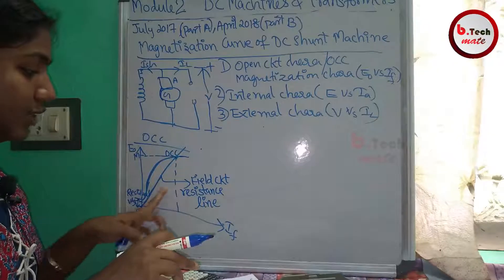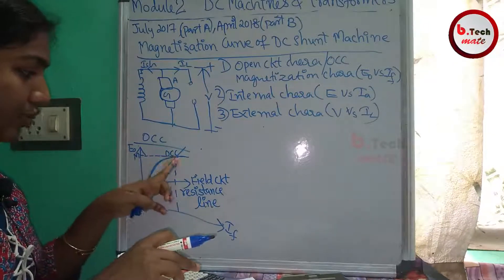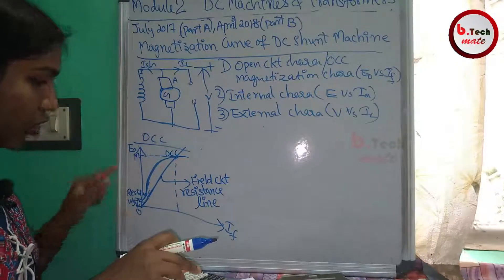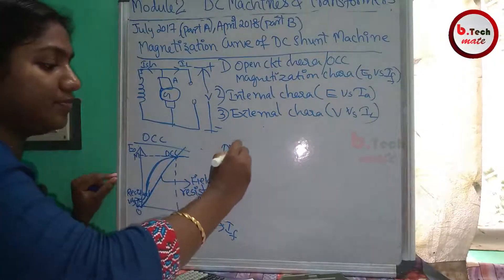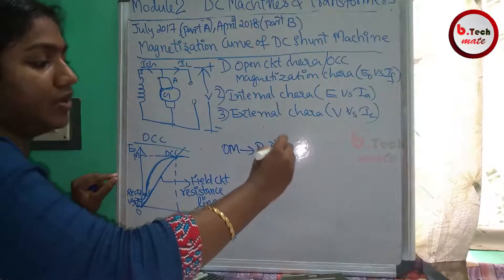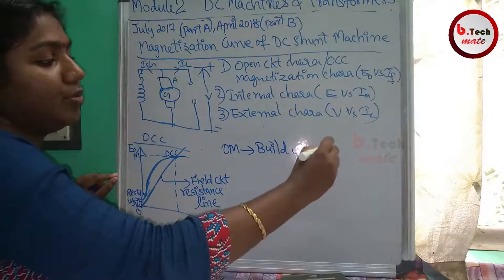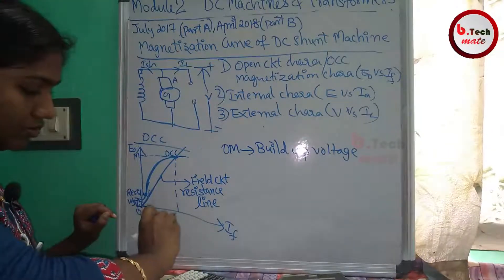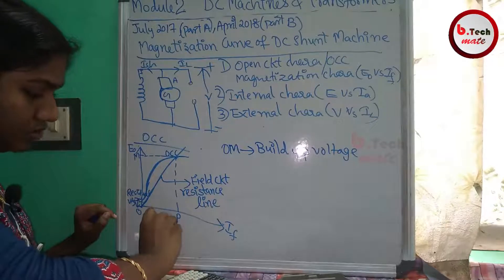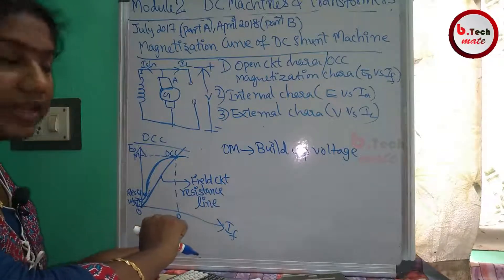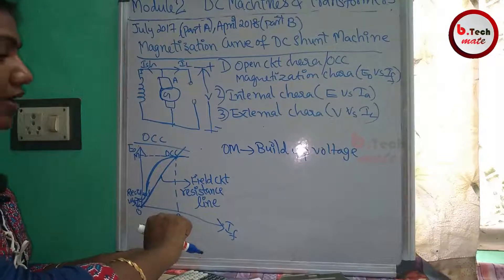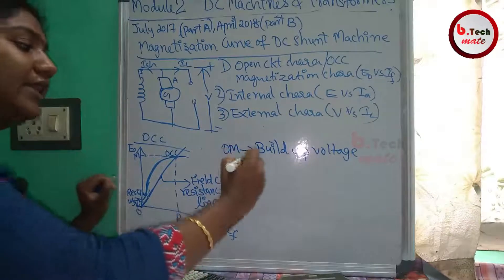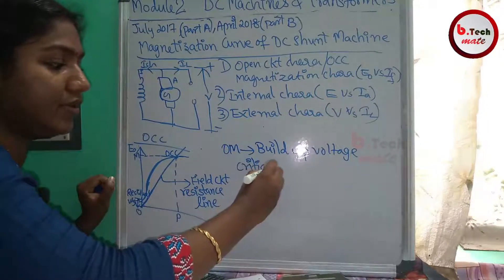On the OCC graph, there is the field circuit resistance line, which coincides with a point. We mark that point. Now in a machine, we have magnetization. We learn a few terms with this magnetization: critical resistance, critical field resistance, and critical speed.